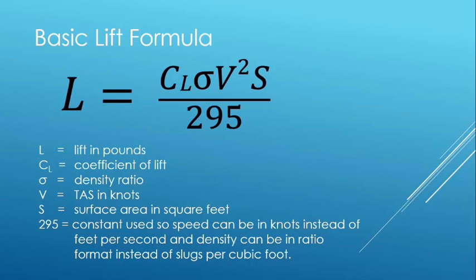A review of the basic lift formula. Lift is equal to the coefficient of lift times density ratio times velocity squared in knots times surface area of the wing divided by 295.